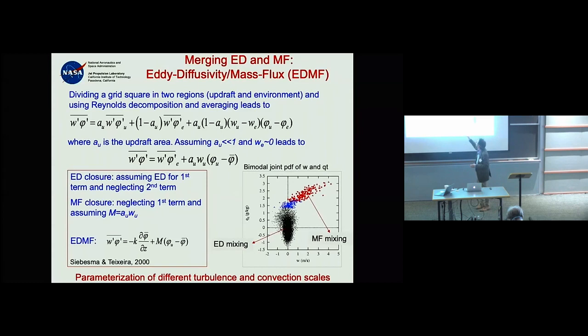That active tail needs to be represented by the mass flux. Intuitively, the mass flux represents the larger plumes spanning the vertical extent of the boundary layer or troposphere, while eddy diffusivity handles the smaller plumes around them.